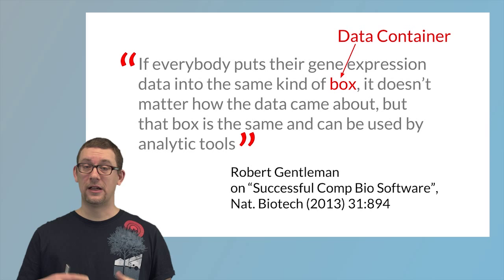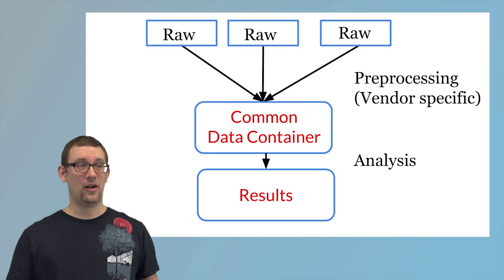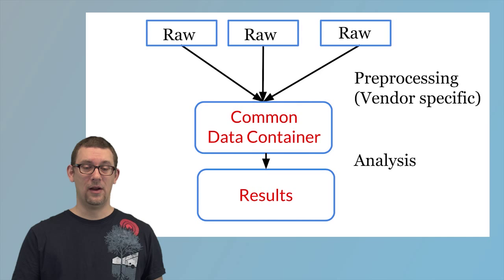So what he's saying is that we are representing that in this little scheme where we imagine that we have different ways of getting the raw data. For example, we may have different vendors in different experiments. This is between experiments.